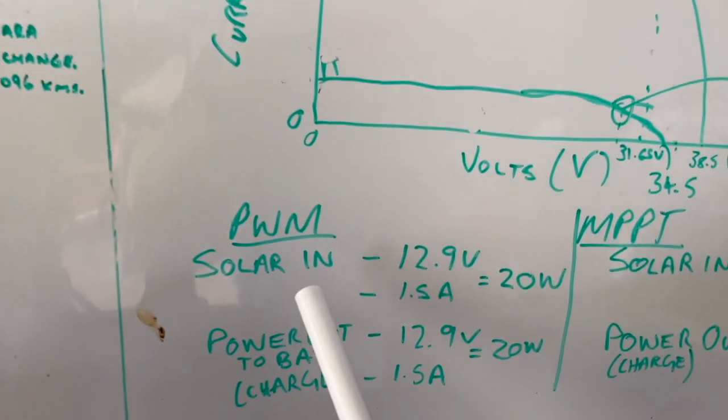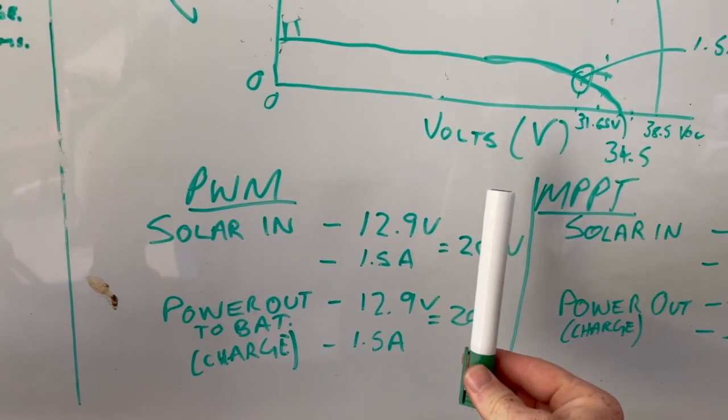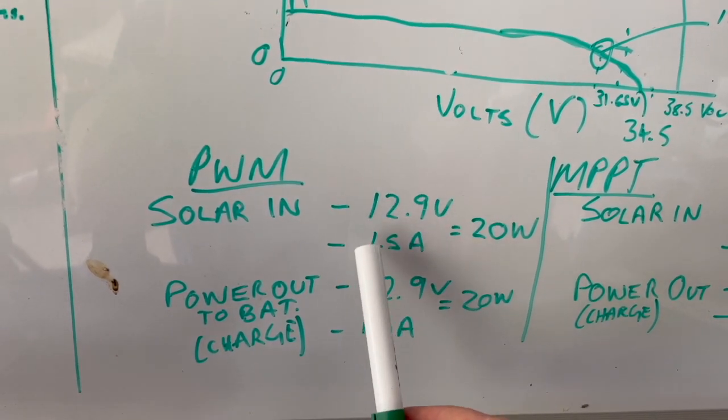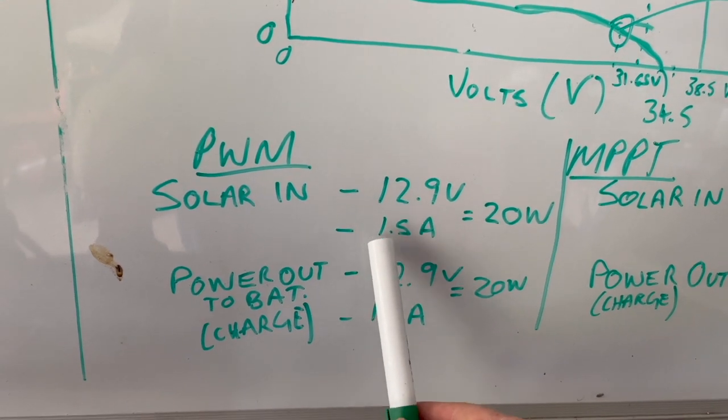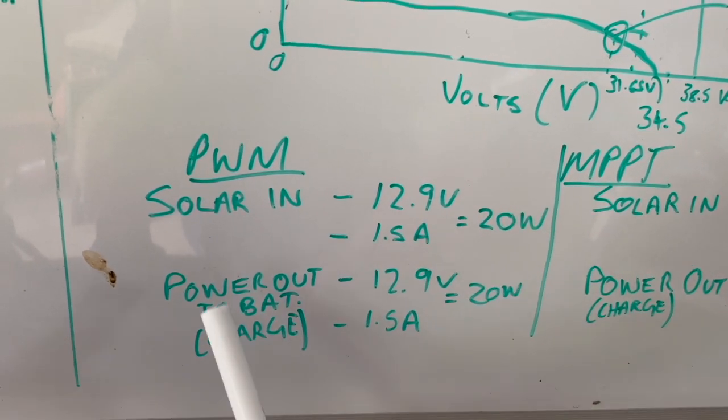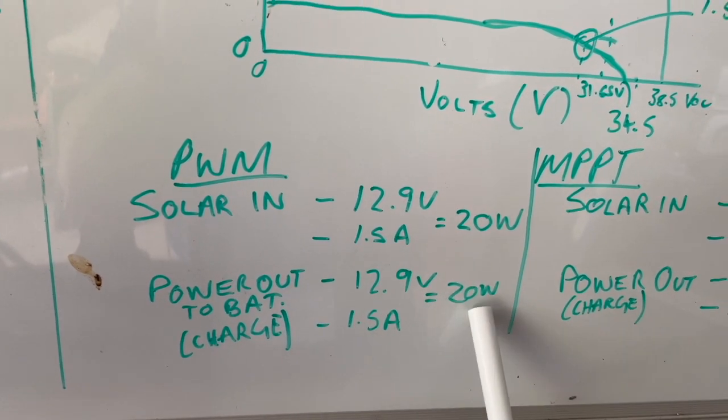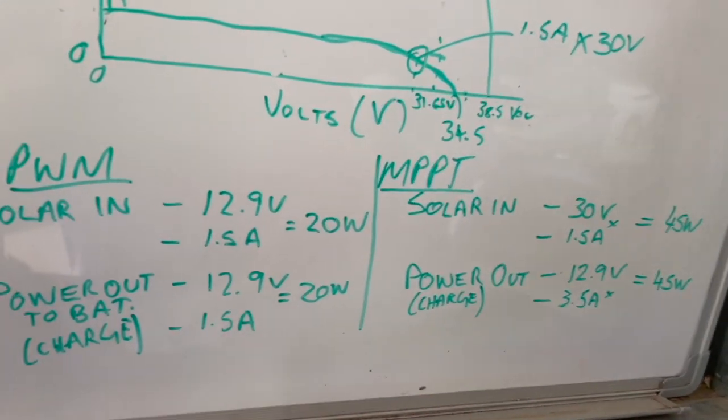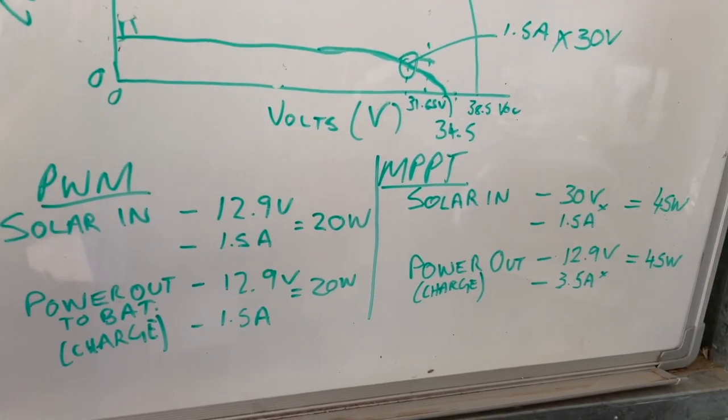Whereas PWM will draw the voltage of the panel down to 12.9. The amps stay the same, but it cannot push them up. So 20 watts come in, 20 watts go to the battery, which is less than half of what the MPPT can do in these conditions with this size of panel.